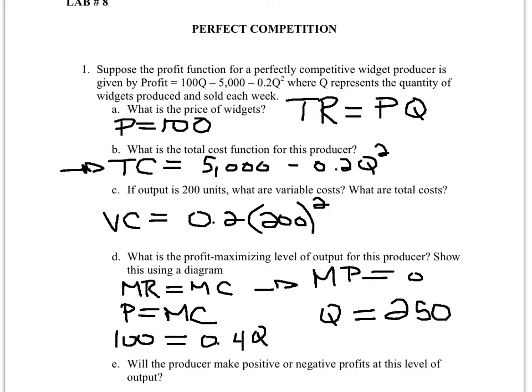Notice that if you plug in q=250 into the profit equation, profit should be maximized, but the marginal profits — meaning the change in profits — should be equal to zero, because profits are not changing since marginal cost and marginal revenue are the same.